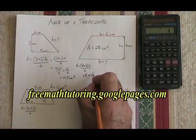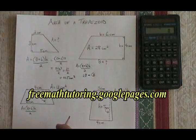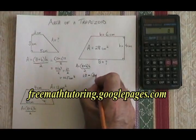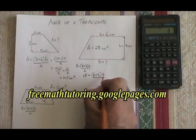28 equals big B stays a variable, plus little b, 6, times H, 4, over 2.